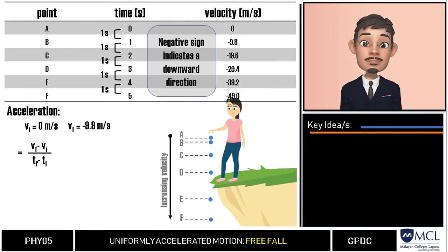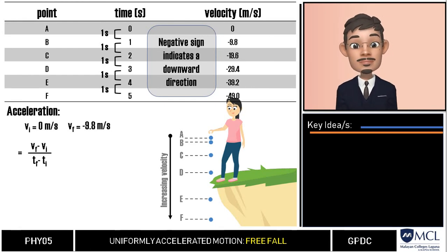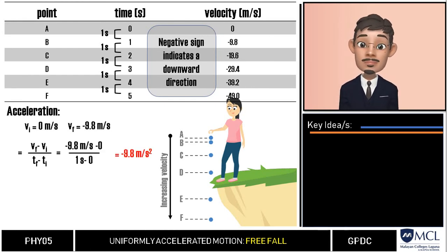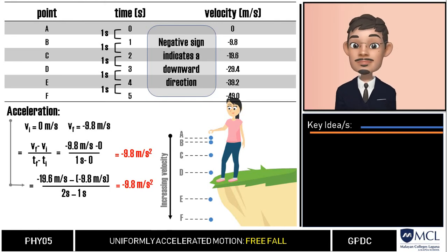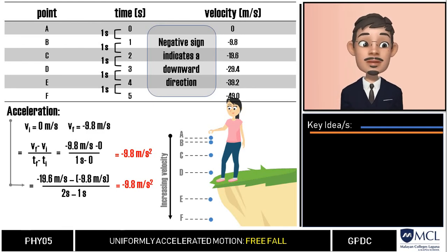Let us see if it is the same for point B to point C. Here we will get time interval at the denominator which when we compute will give us the same result. If acceleration is calculated until time equals five seconds we will still get the same value which is negative 9.8 meters per second squared.